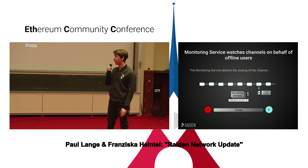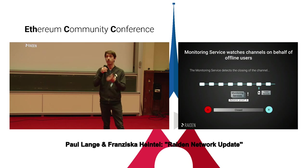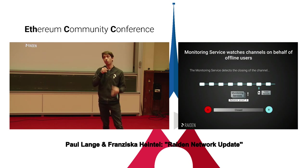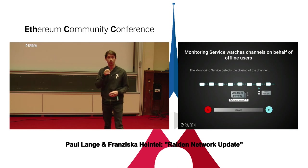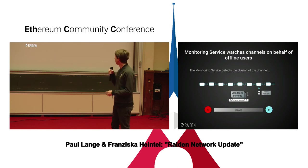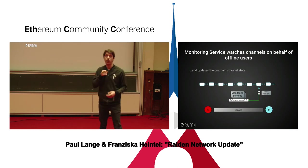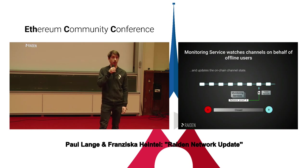The monitoring services find out about the channel being closed and check their database for what they need to react to. They act on behalf of Alice and everything turns out fine. Bob can only close the channel when he uses the correct balances.